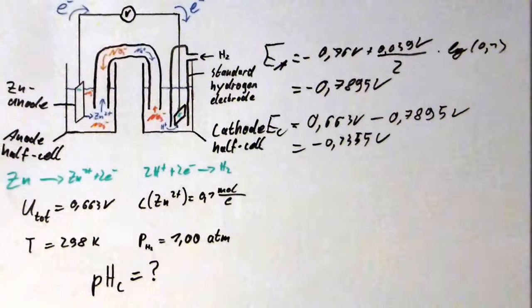So now we can use the Nernst equation again for a final step, but in this case we have to isolate the negative decadic logarithm.